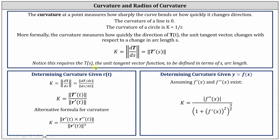Notice this requires T of s, the unit tangent vector function, to be defined in terms of arc length s. Therefore, we use the chain rule and rewrite the curvature formula as: the curvature equals the magnitude of T prime of t divided by the magnitude of r prime of t. There's also the alternative formula where curvature k equals the magnitude of the cross product of r prime of t and r double prime of t, divided by the cube of the magnitude of r prime of t. For our example, we'll take a look at both of these formulas.